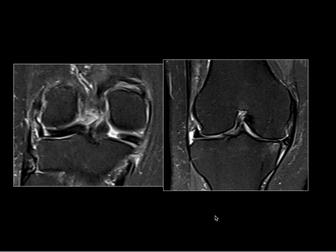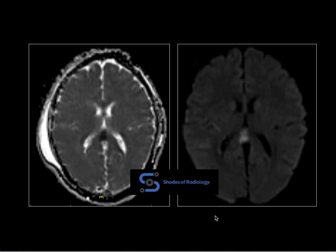History of trauma — classic transient splenial lesion. This is a case of diffuse axonal injury. You can see the soft tissue swelling here as well. It is noted in the splenium of the corpus callosum. There are various differentials for transient splenial lesion, but given the history of trauma, the diagnosis is diffuse axonal injury.